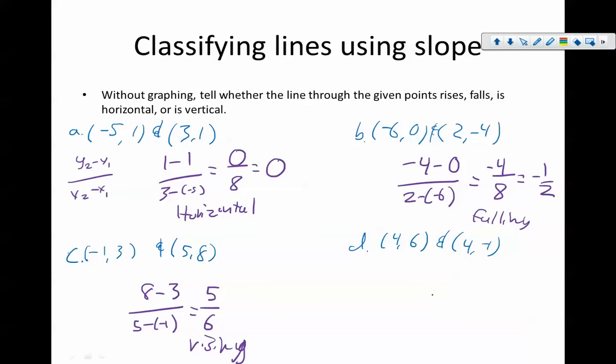And then, this last one here is negative 1 minus 6 over 4 minus 4, which is negative 7 over 0. 0 is in the denominator. You can't divide by 0, so this is undefined, and it is a vertical line.